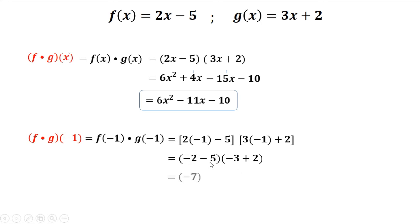Then negative 2 and negative 5, that's negative 7. This one is negative 3 plus 2, that's negative 1. So negative 7 times negative 1, it's positive 7. So the answer is positive 7.